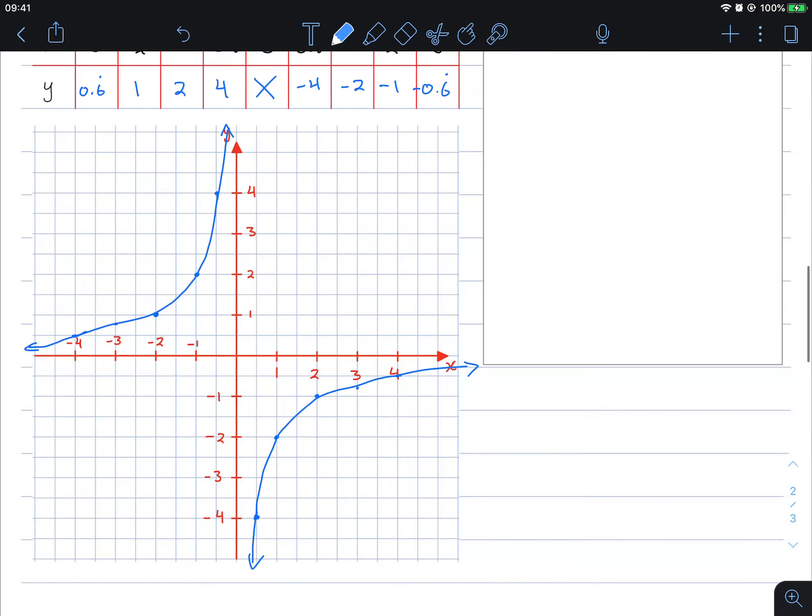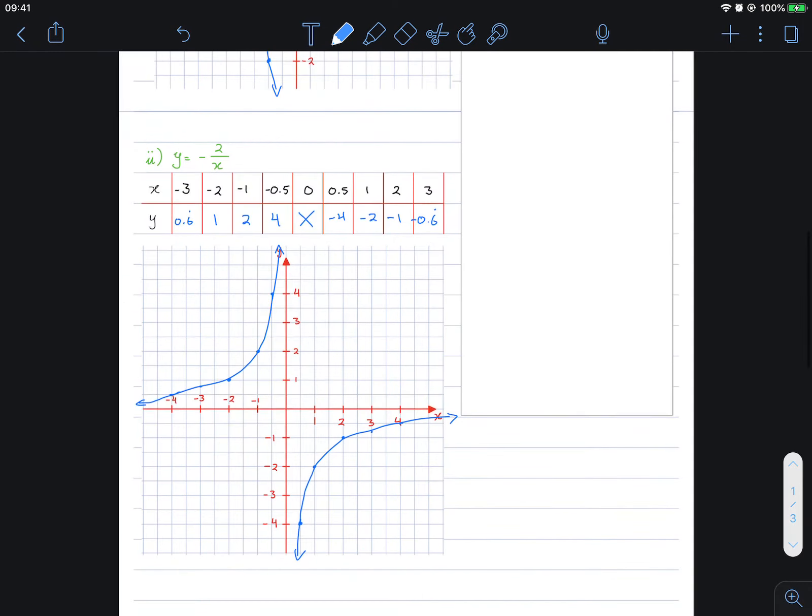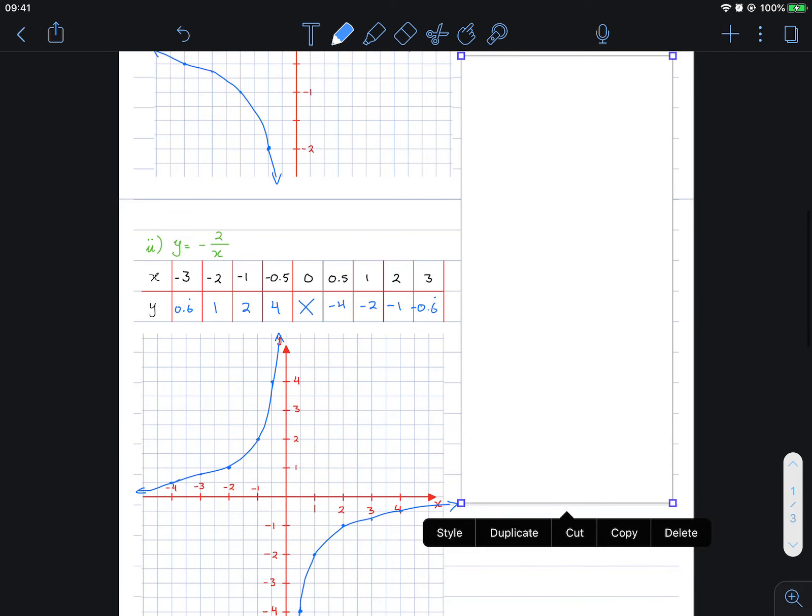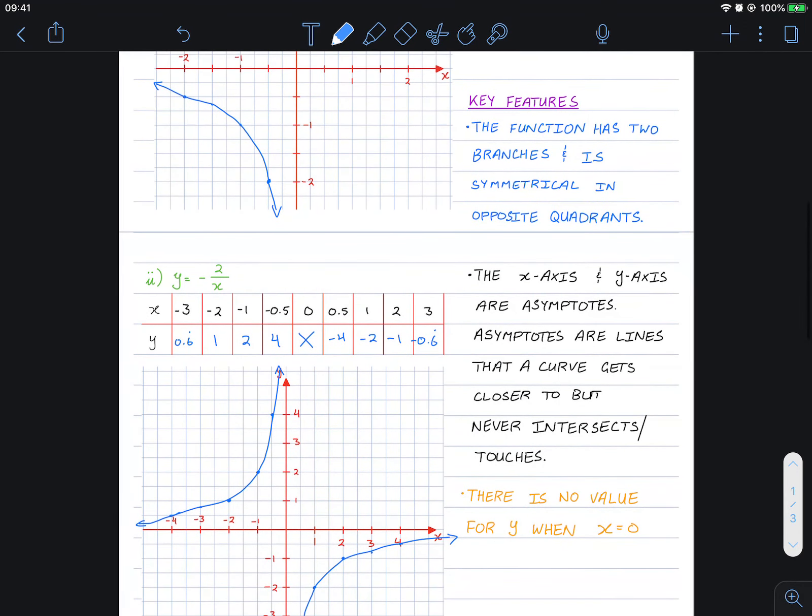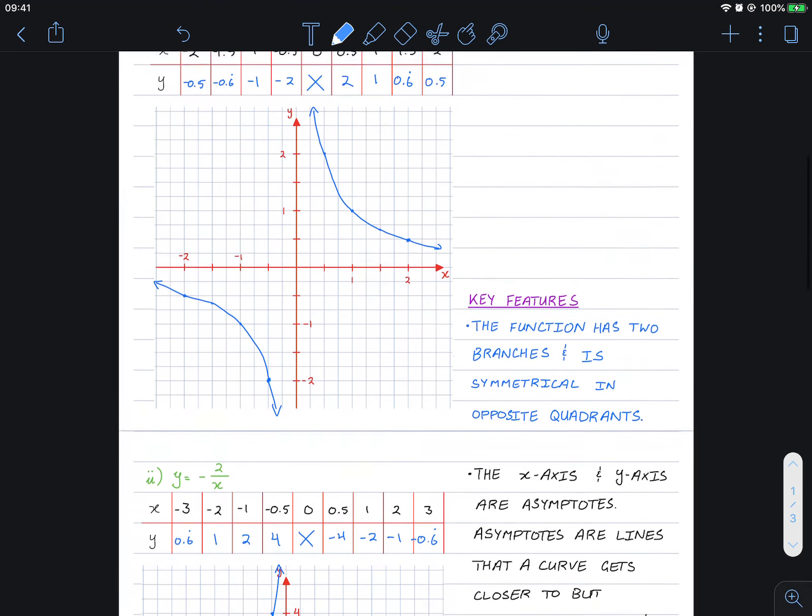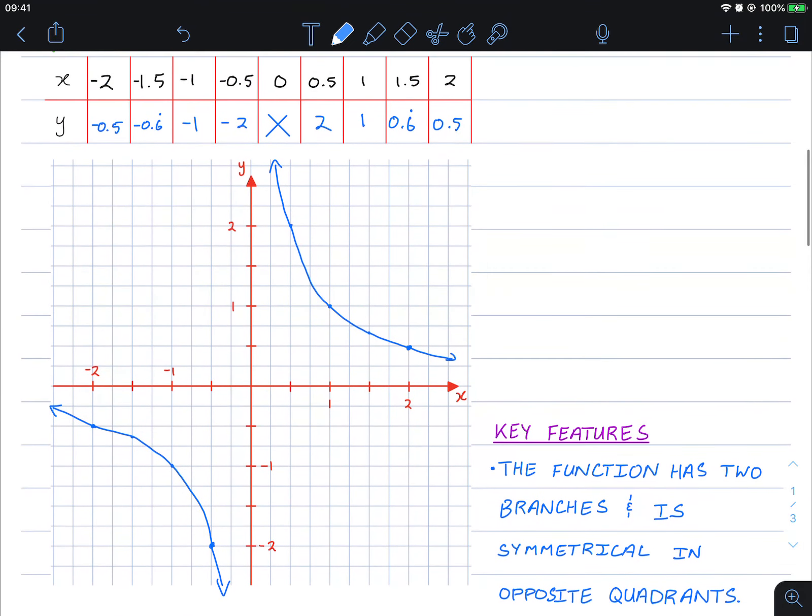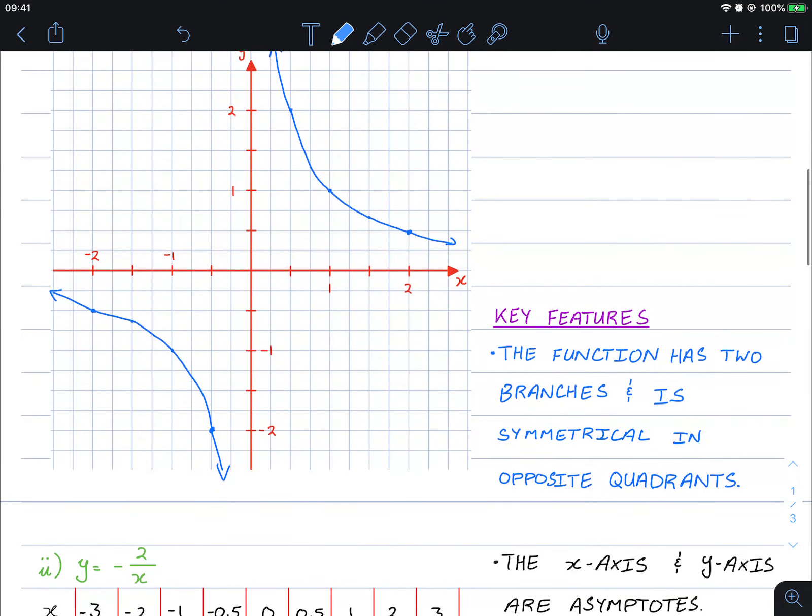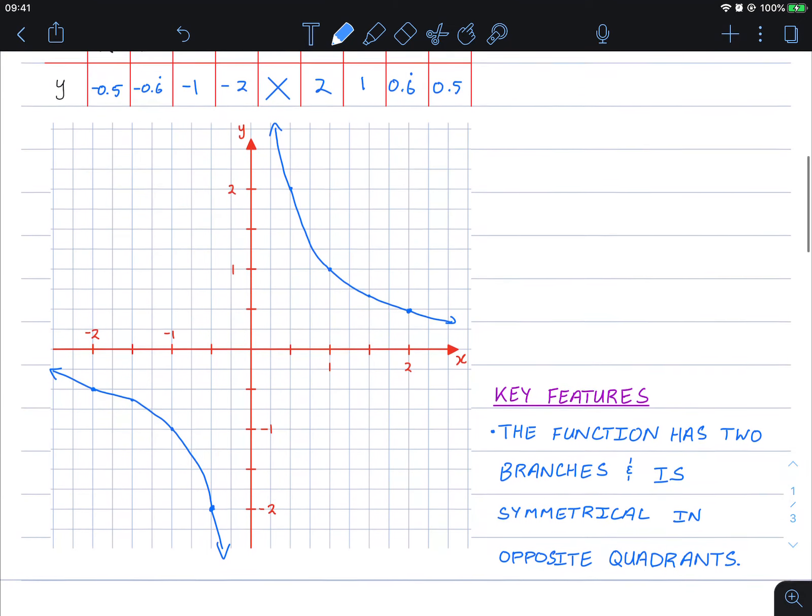And these are what inverse functions look like. Now here are the key features that we are looking for. With an inverse function, the first thing we need to understand is it has two branches and is symmetrical in opposite quadrants.